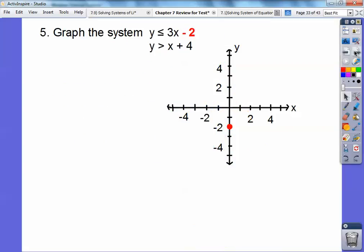Let's try this one. Graph the system right here. We're going to graph each line. I already started the -2 part. So there's that one. Then I'm going to use this slope, up 3 to the right 1. So up 3 to the right 1.